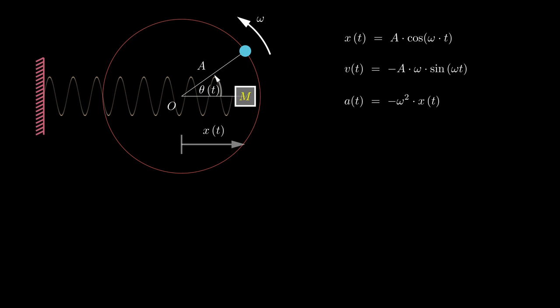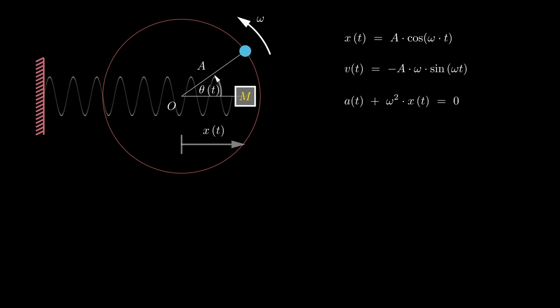The negative sign in the acceleration expression indicates that the acceleration is directed opposite to the displacement, effectively always pointing towards the equilibrium position O. This derivation establishes the fundamental concept of simple harmonic motion. Therefore, in any scenario where acceleration is directly proportional to the displacement but in the opposite direction, the object's motion demonstrates simple harmonic motion. It's crucial to note that the coefficient of displacement x is the square of the angular frequency of the oscillating system, assuming the coefficient of acceleration is 1.